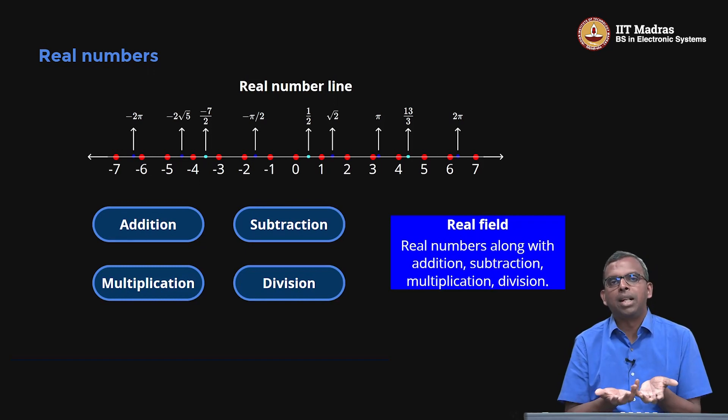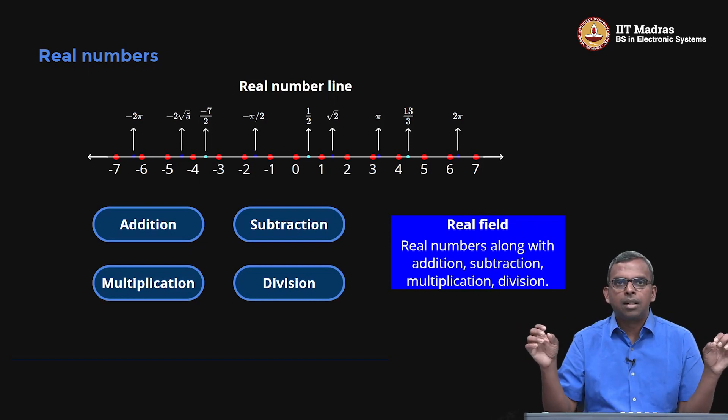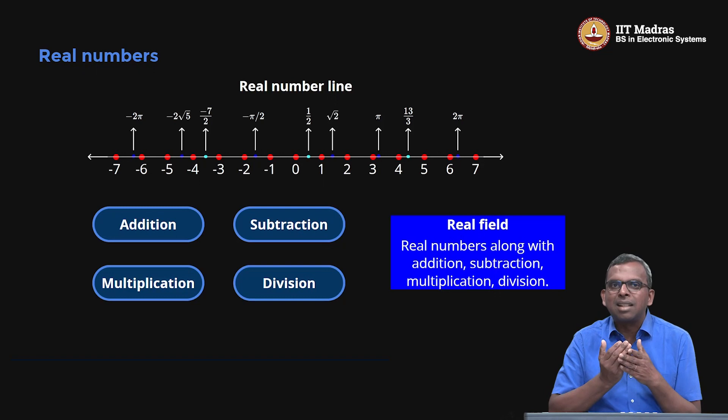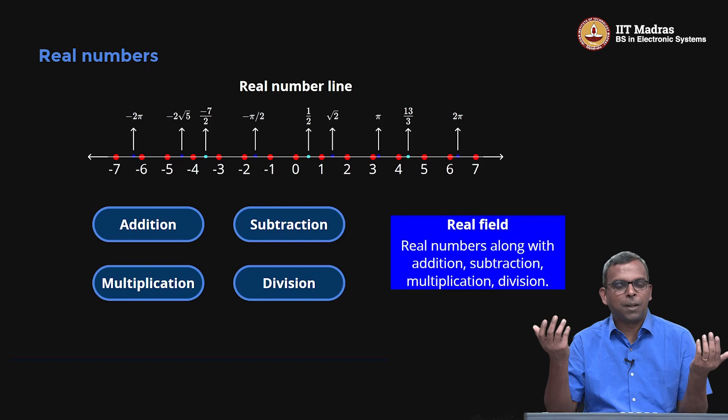The real numbers form a field. The integers, for instance, do not form a field. You can add, subtract, and multiply, but you cannot divide. If you divide 7 by 6, you get 7 by 6, which is not an integer. You go outside of the set.